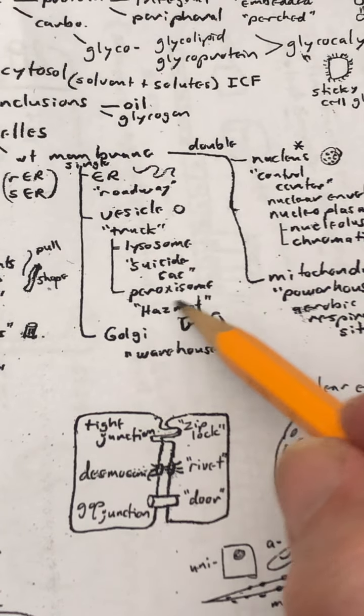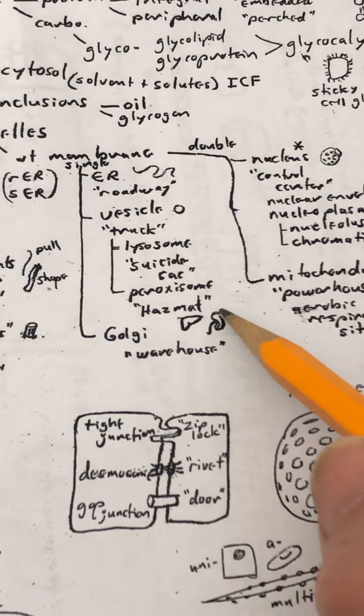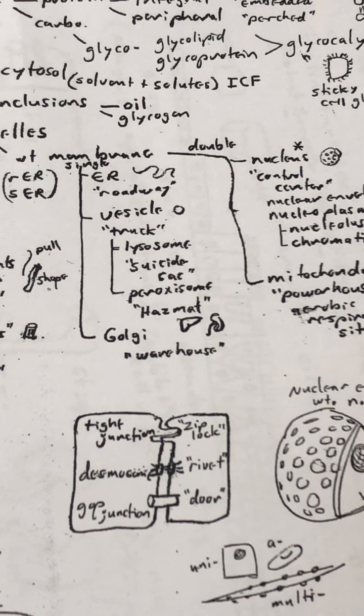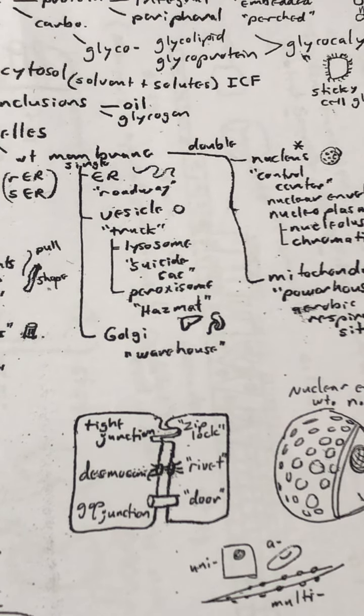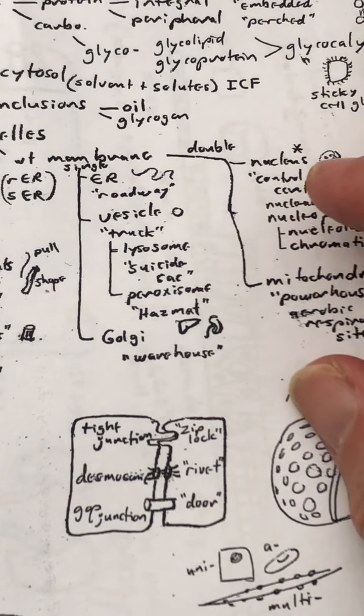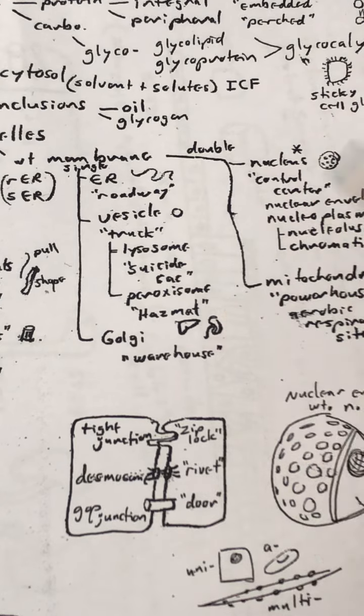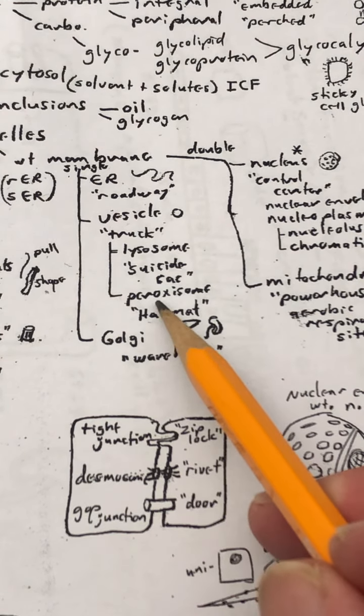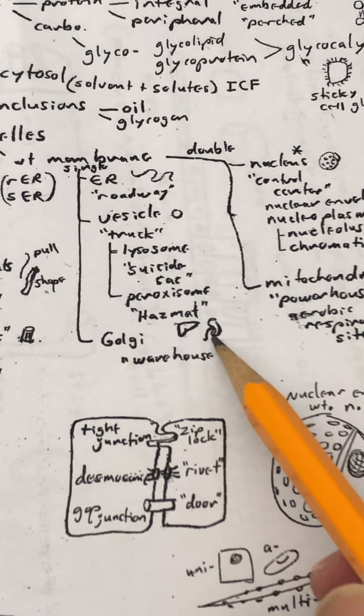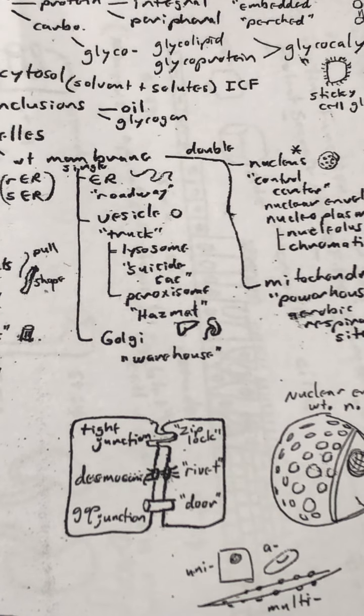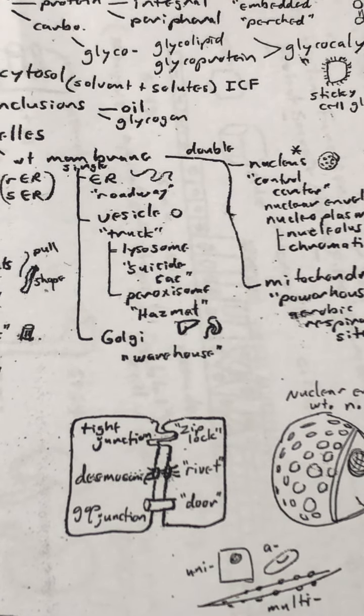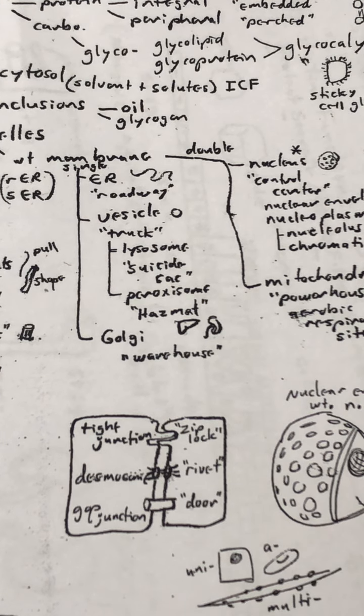Peroxisomes. Peroxisomes are what we call hazmat, hazardous materials. These things may have all kinds of materials inside that also have the purpose of deactivating something. There's a great deal of peroxisomes inside liver and kidney cells, in that they are trying to detoxify, buffer, neutralize toxic materials in your system.